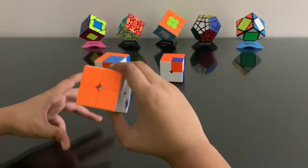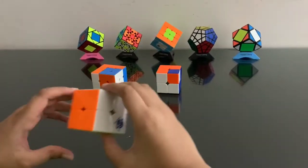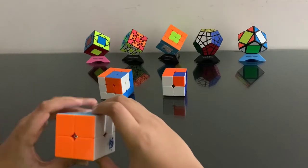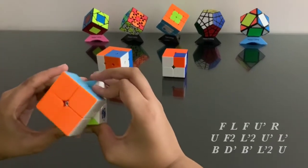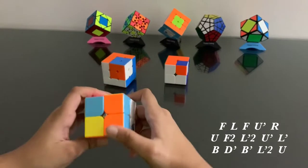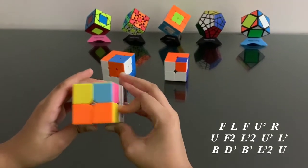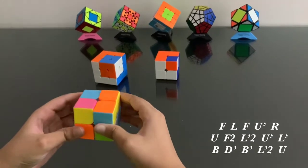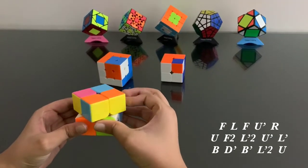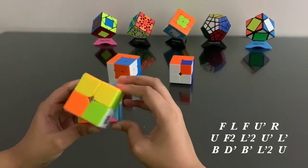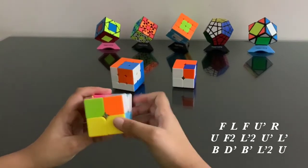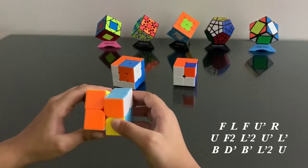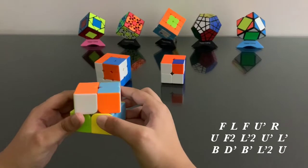So it goes like this: F, L, F, U', R, U, F, L, U2, L'2, U'.